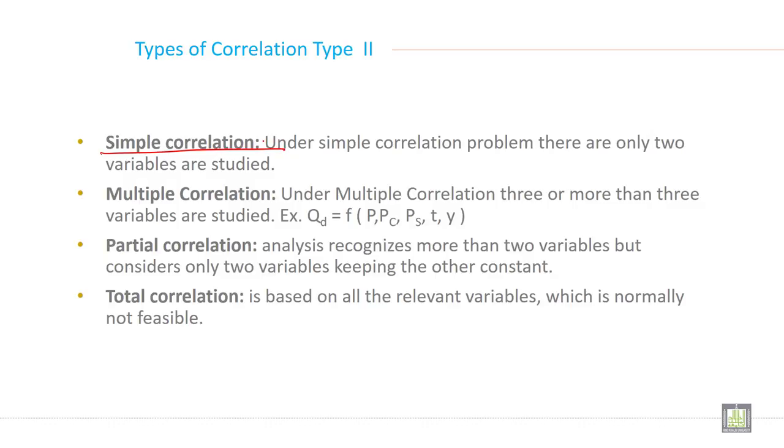Multiple correlation. Under multiple correlation, three or more than three variables are studied. Example: when you have more than three or more than four variables and you want to examine what are the relationship between those variables, then it is called multiple correlation.